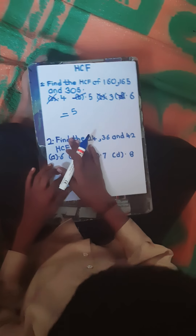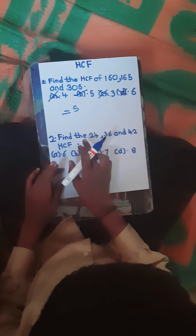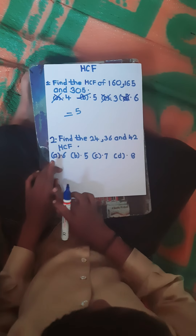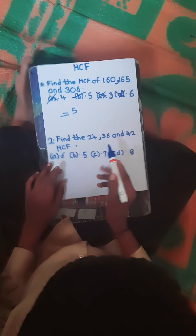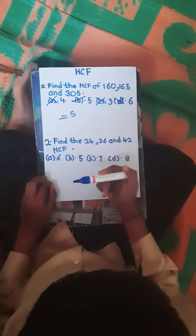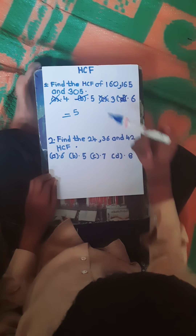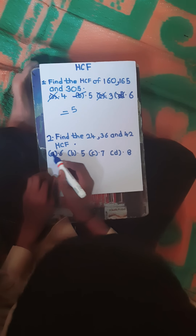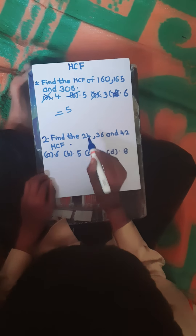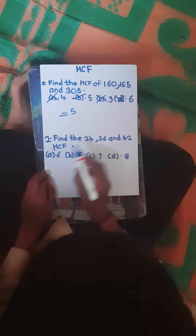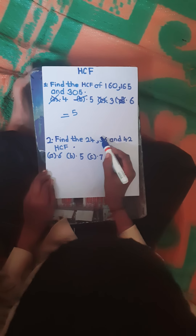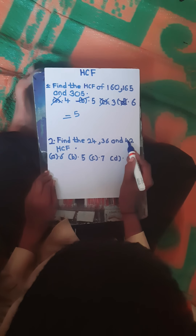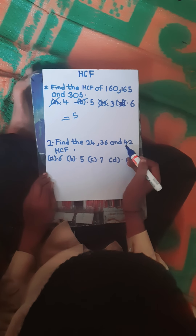Second question: find the HCF of 24, 36, and 42. The number which divides all these numbers is the answer. Let's check 6: 6 × 4 = 24 ✓, 6 × 6 = 36 ✓, 6 × 7 = 42 ✓. So 6 divides all three numbers.